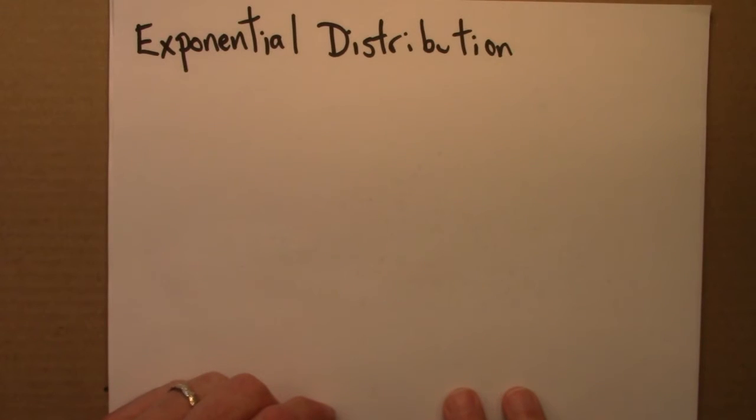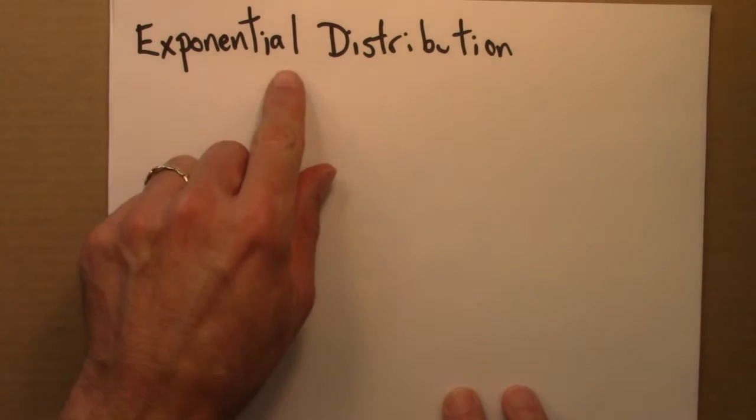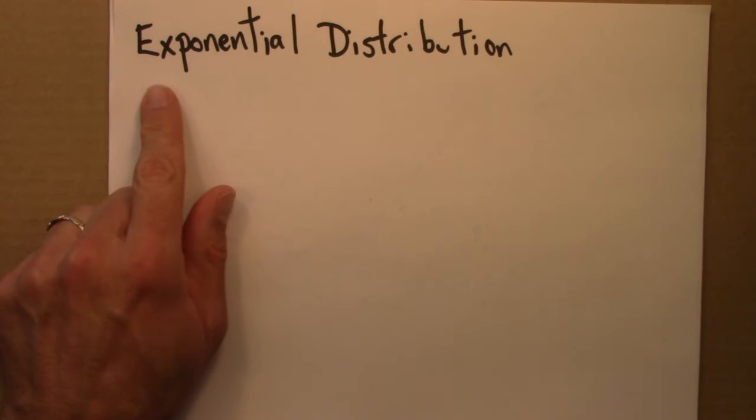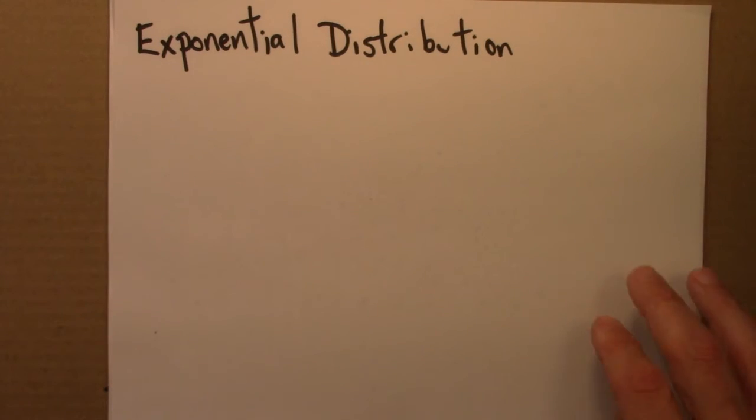There's another type of distribution that I want to introduce, known as an exponential distribution or sometimes a geometric distribution. It's important because it provides a very useful contrast for power law distributions.